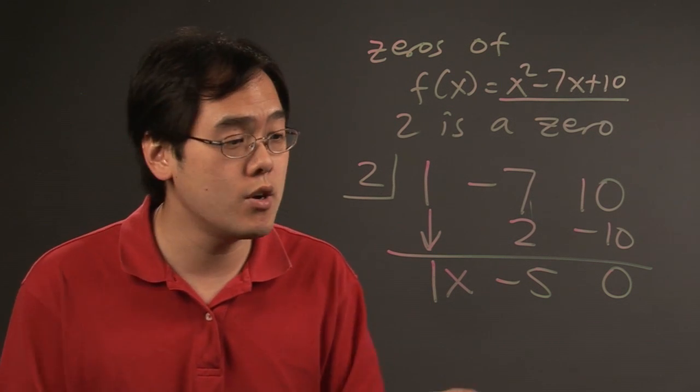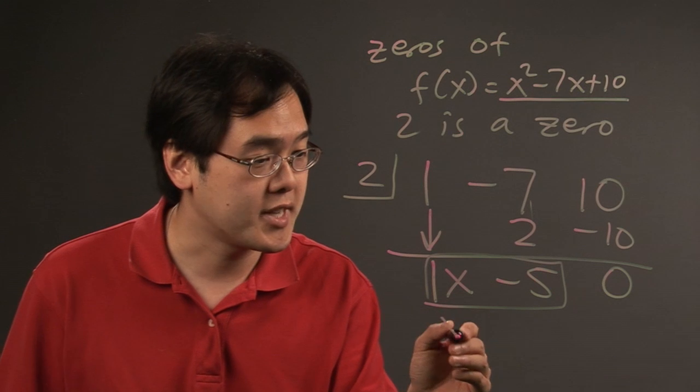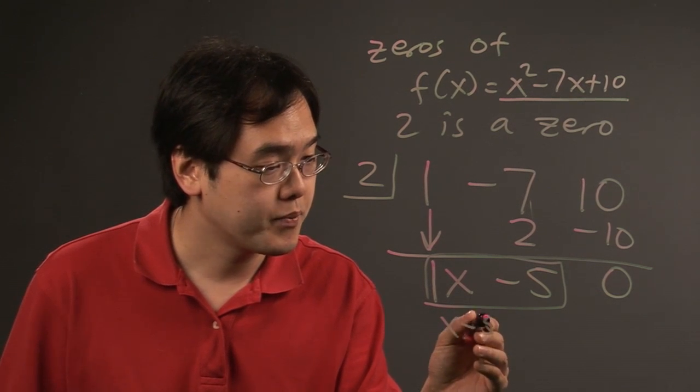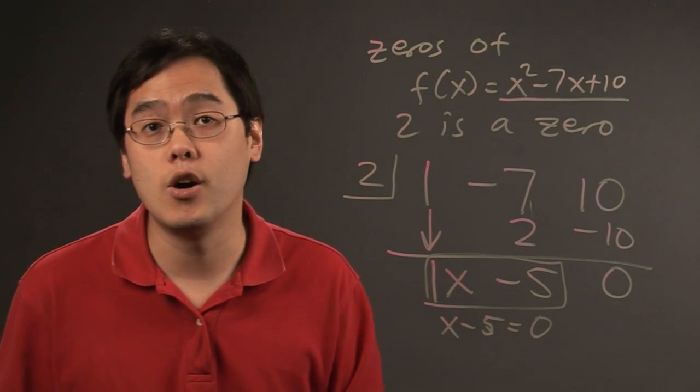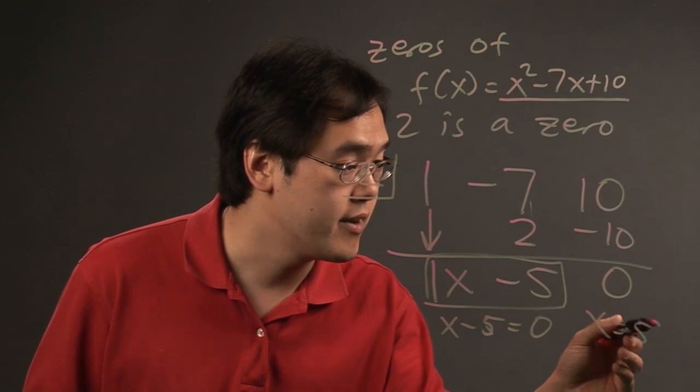How do you find the rest of the zeros is you take what's left over, x minus 5, and you set it equal to zero and solve. And as you can tell, x is going to equal 5.